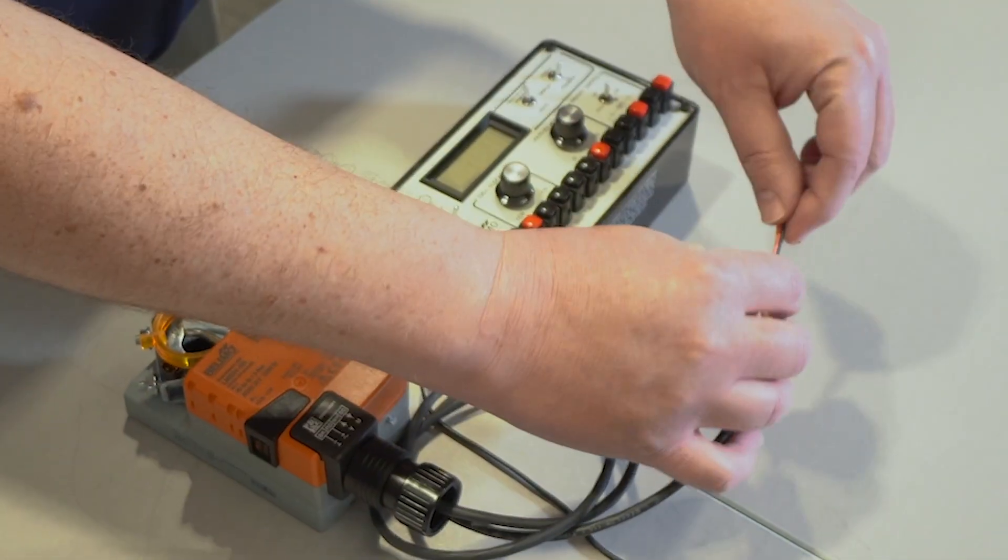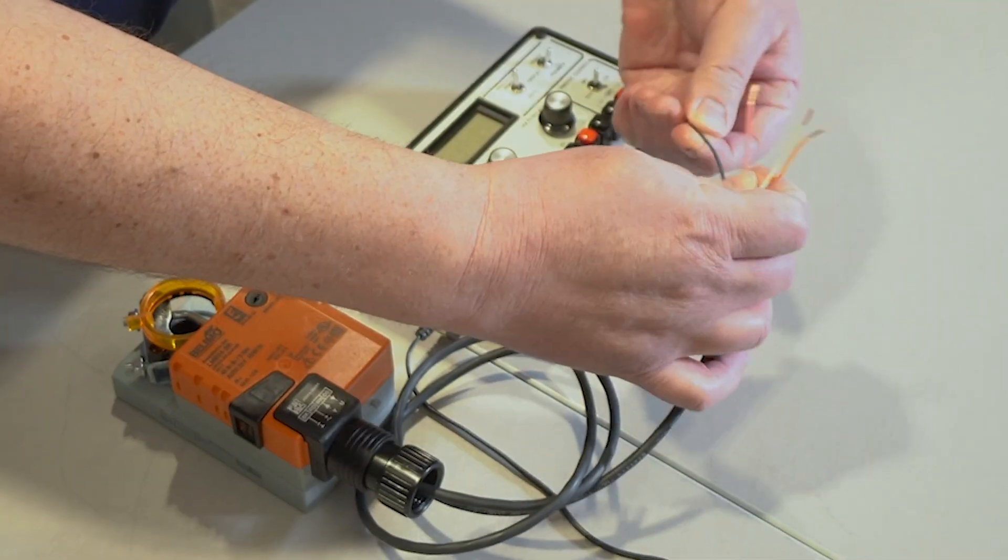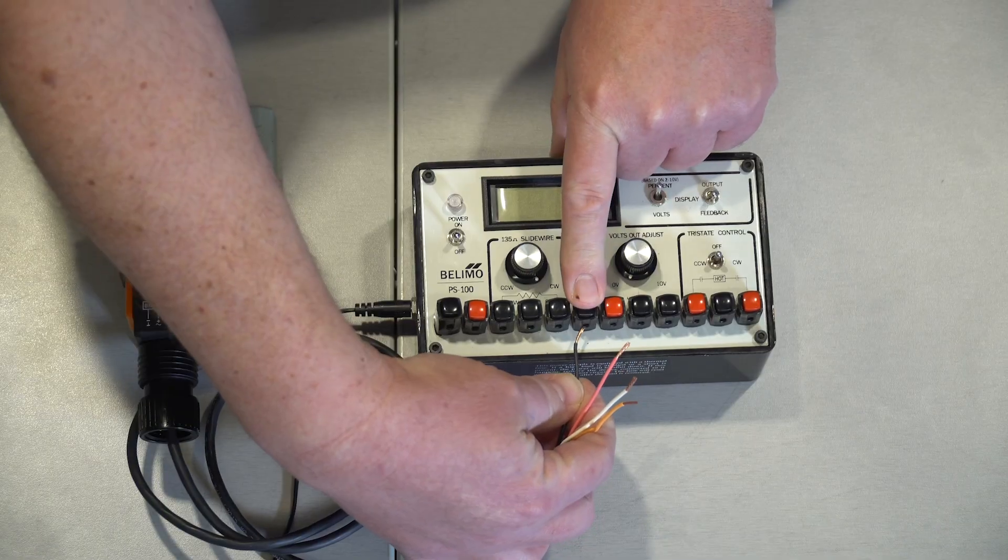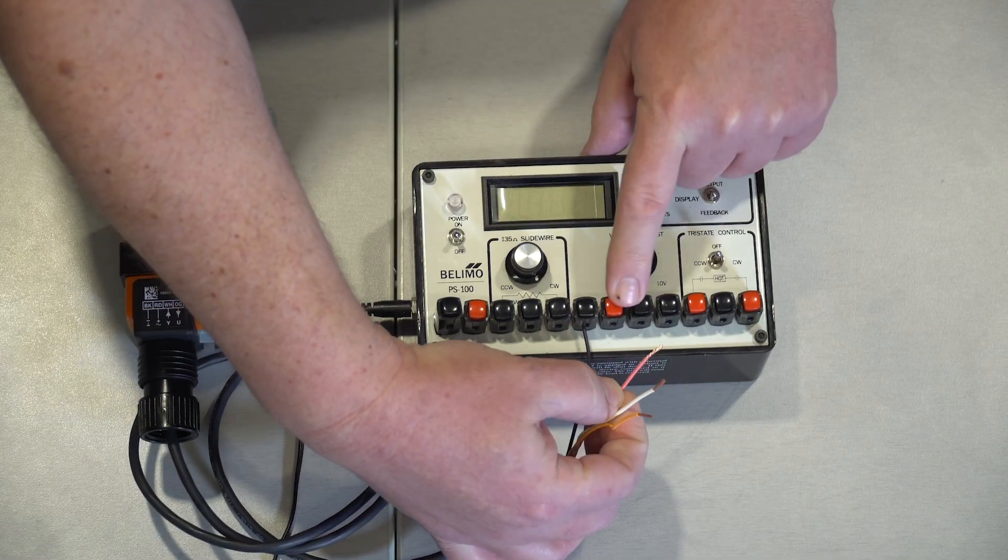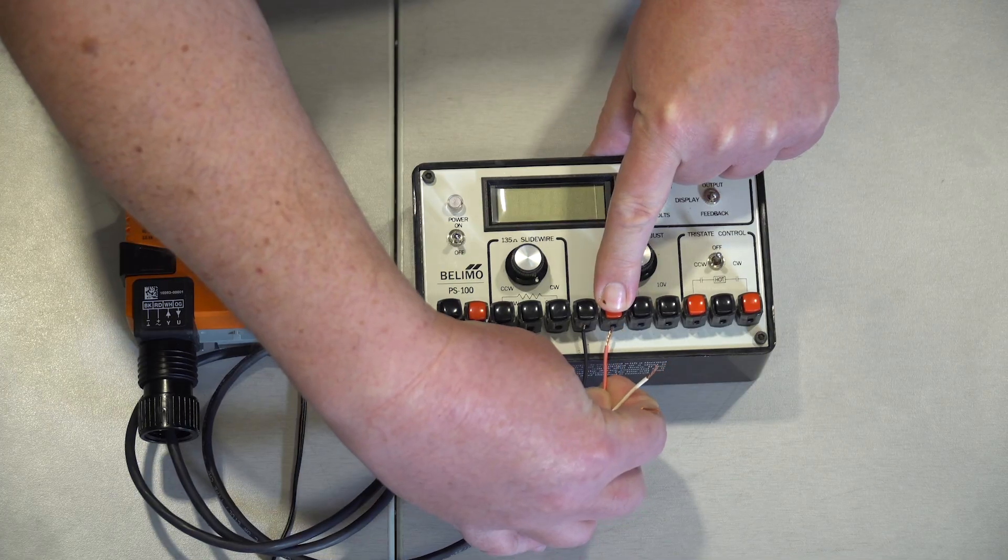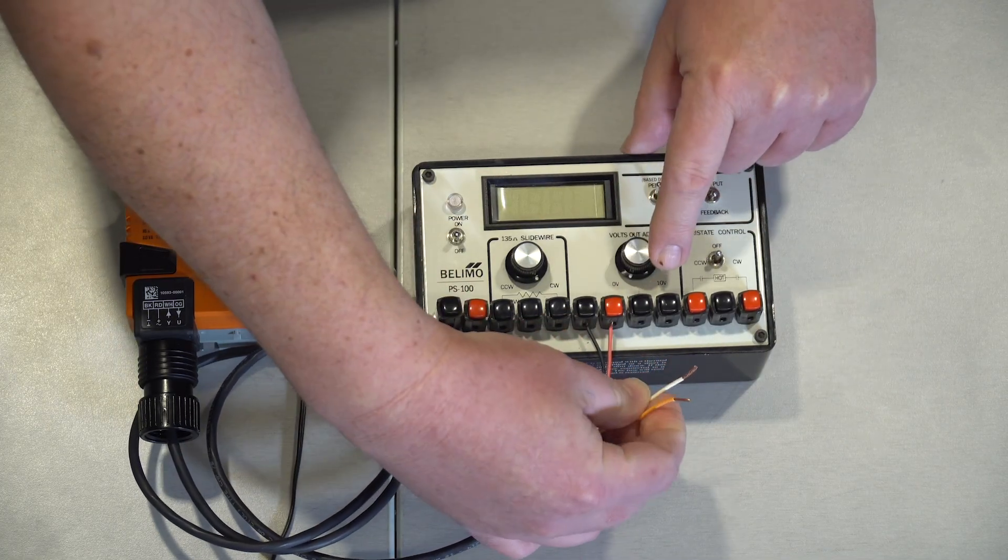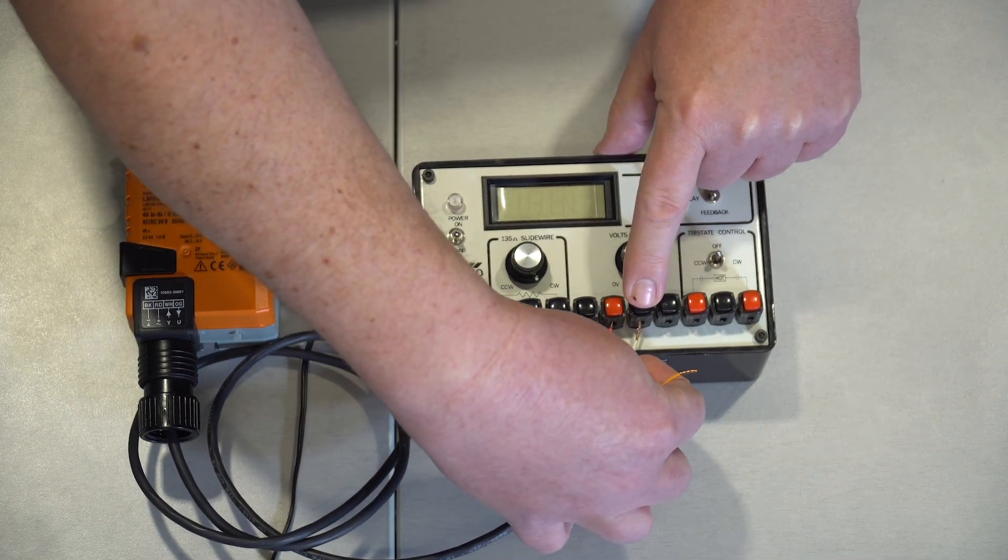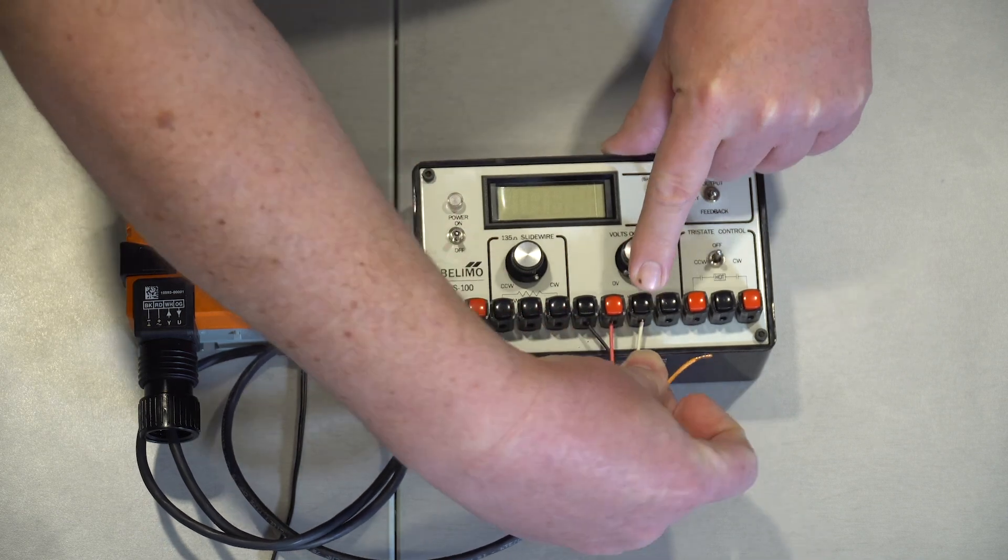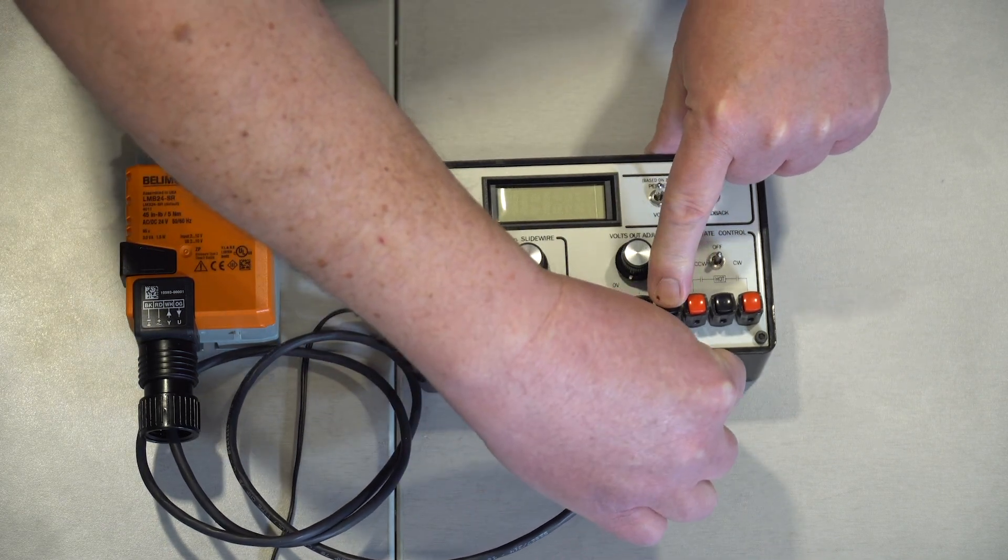The standard way to wire this is to connect the black wire to transformer common, the red wire to 24 volts hot from the transformer, the white wire to a 2 to 10 output, and the orange feedback wire will be connected to feedback.